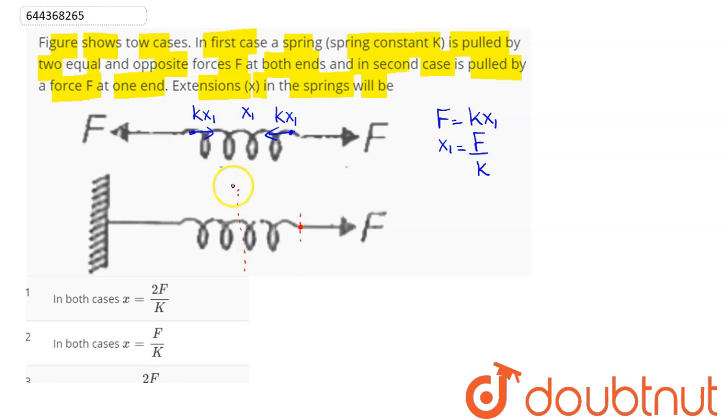This portion is natural length, and suppose here x2 is the elongation. At the mean position, kx2 equals F, so F equals kx2. Hence x2 comes as F/k.